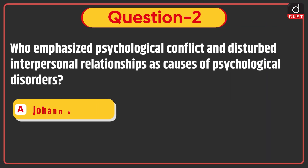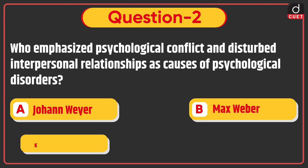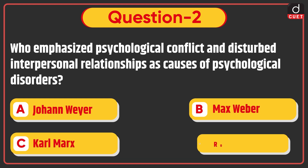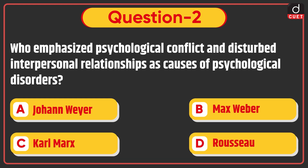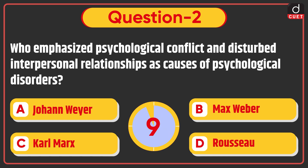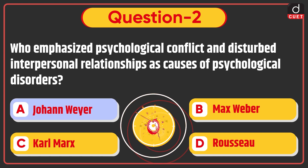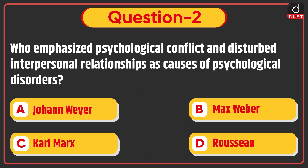Next question: who emphasized psychological conflict and disturbed interpersonal relationships as causes of psychological disorders? Johan Weir, Max Weber, Karl Marx, or Razeev? The correct answer is option A: Johan Weir.